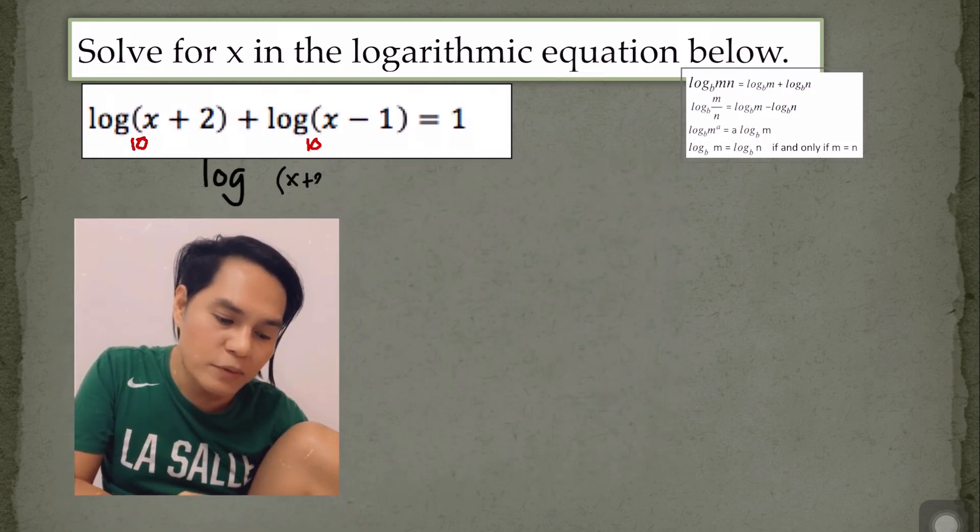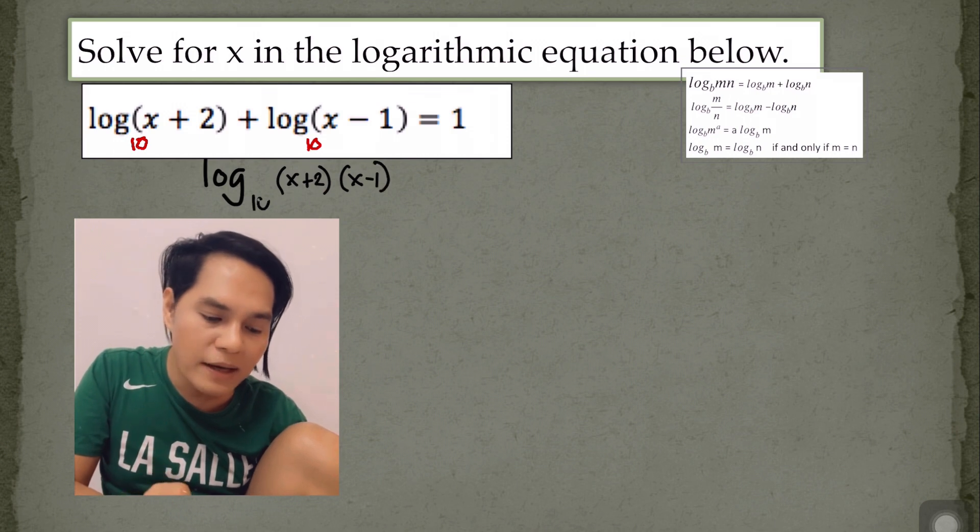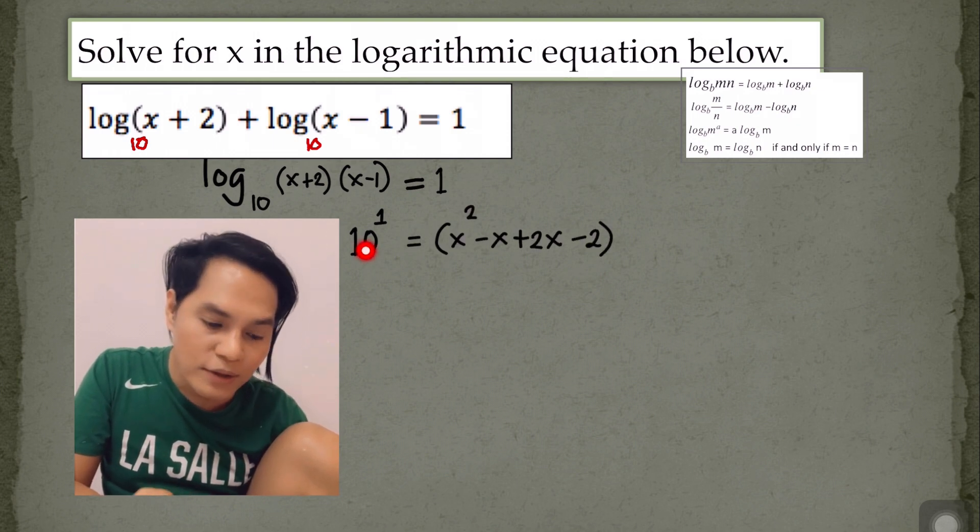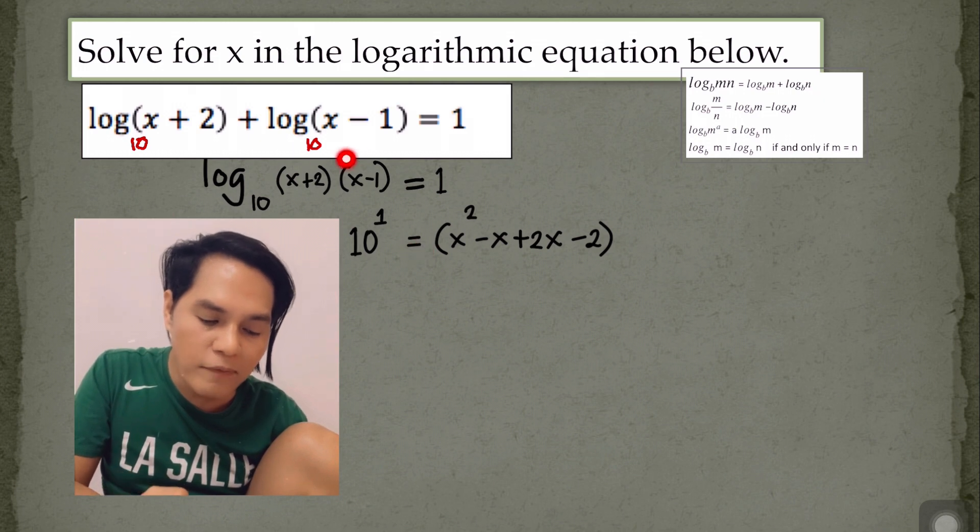Remember, that is our target to make this one in a single expression. And then, as I have told you a while ago that it should be base 10, then we can rewrite this expression now into an exponential form. So 10 to the power of 1 is equal to the product of these binomials. There you go.